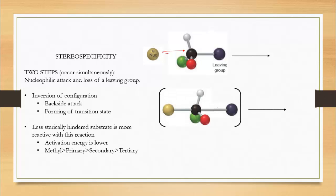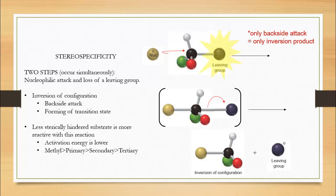This means we can only have one type of product, the inversion of configuration. Because since the leaving group doesn't leave first, the other side is not readily available, due to steric hindrance.